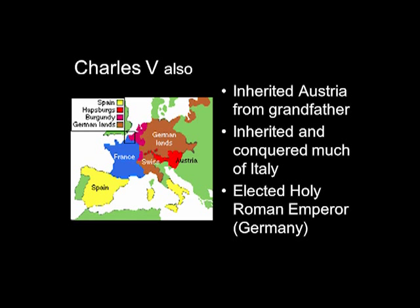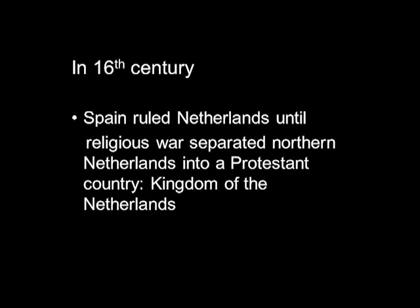He also inherited interests in Austria — his grandfather was Maximilian of Austria, the husband of Mary of Burgundy. He either inherited or conquered much of Italy, and was elected Holy Roman Emperor, a Germanic title. Essentially he was ruling most of Europe, with broad territorial acquisitions. And that is how Spain acquired the Netherlands — in the 16th century, the king of Spain ruled the Netherlands until the later 16th century.